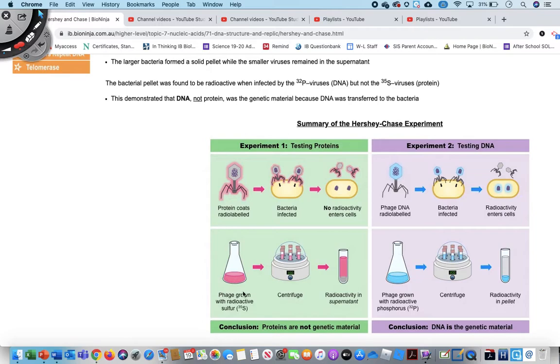So for example, in experiment one, after the phage was grown with the radioactive sulfur-35, they centrifuged it. And when you centrifuge a solution, it separates it into different densities. So then what ends up happening is the supernatant is the liquid that contains the lighter substances. So the supernatant was radioactive and it's what contained the proteins.